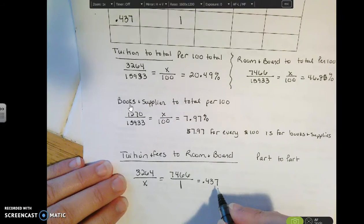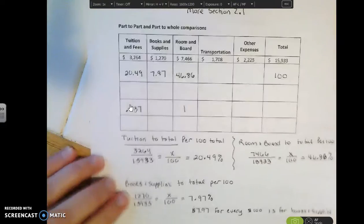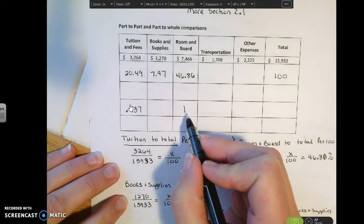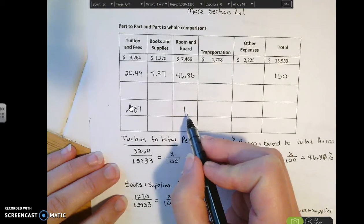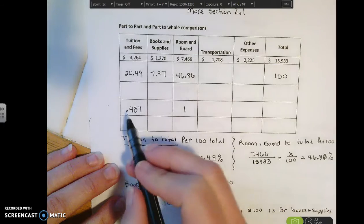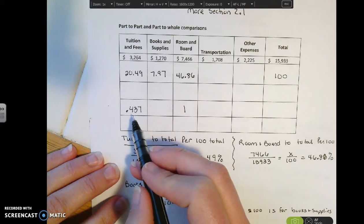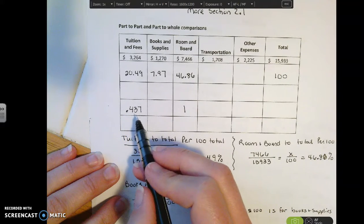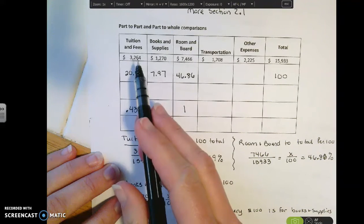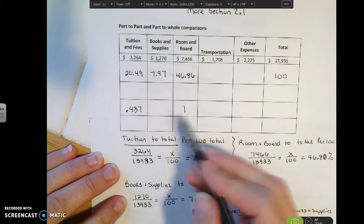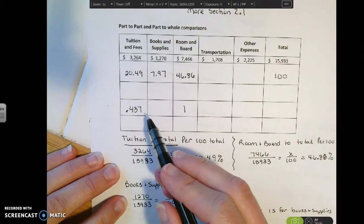So what we're looking at here is basically for every $1 spent on room and board, $0.43 or $0.44 is spent on tuition and fees. So again, this is another type of ratio for comparison.